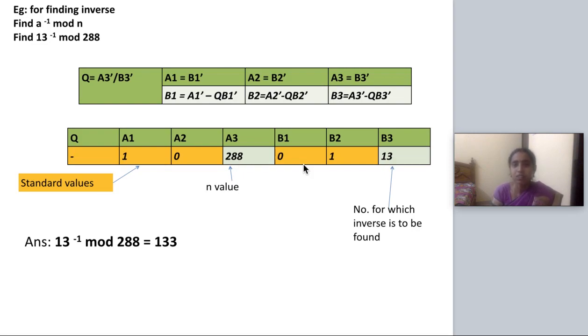Finding inverse, we have a standard table. The standard table has 7 columns and the column headers are Q, A1, A2, A3, B1, B2 and B3.